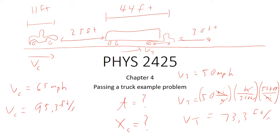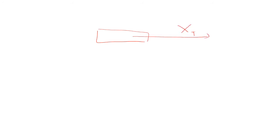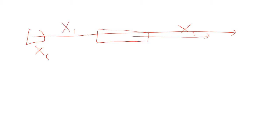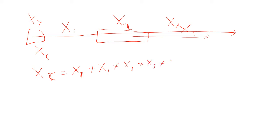Now there are two ways of solving this problem. One way is to track the distances x sub T and x sub C individually, accounting for x1, x2, x3, and x4 — the various gap distances — and set up the equation that x sub C equals x sub T plus x1 plus x2 plus x3 plus x4, then solve the position equations for the car and the truck. That's one way of doing it — but that's the hard way, and we don't want to do it the hard way.